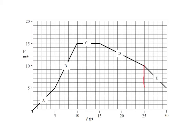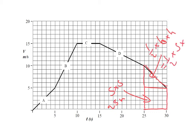For section E, we have two shapes: a rectangle from 25 to 30 seconds with height 5, giving 25 meters, plus a triangle — half times 5 times 5 — which is 12.5 meters. So 25 plus 12.5 gives us 37.5 meters for section E.